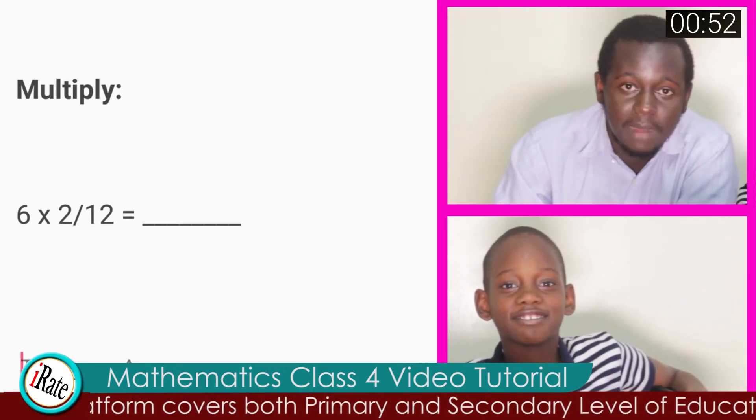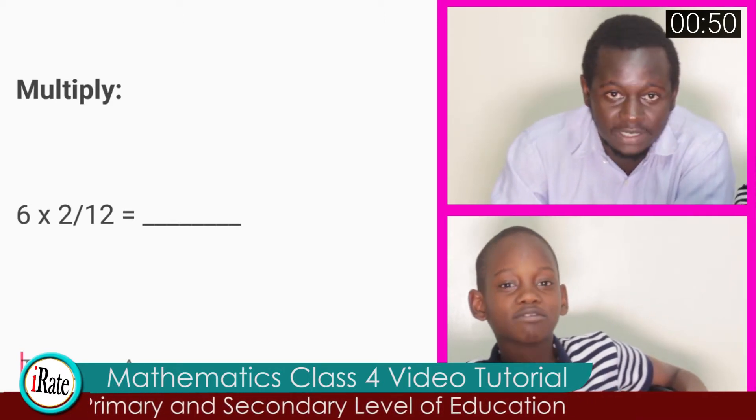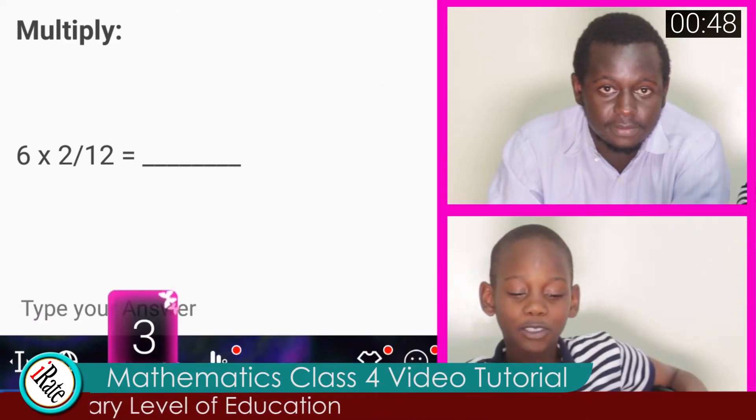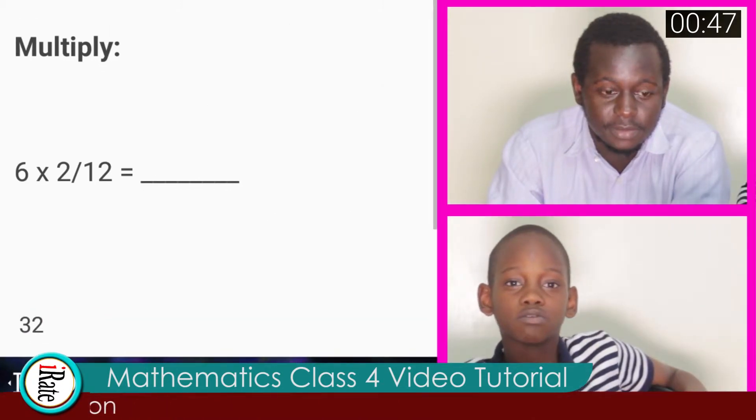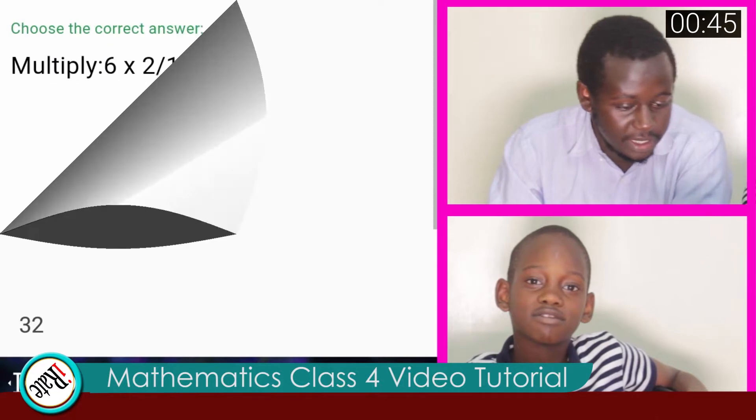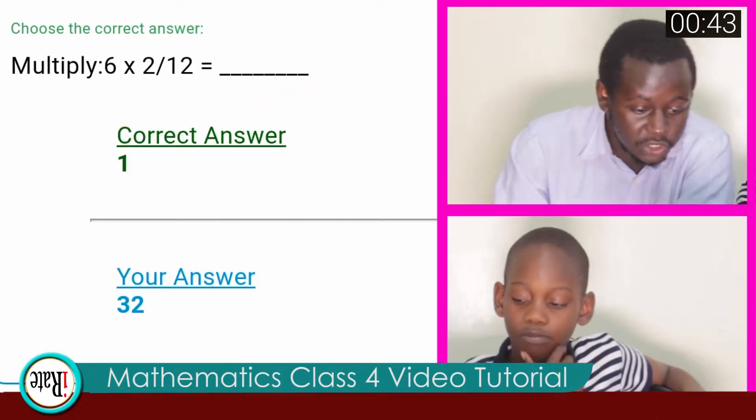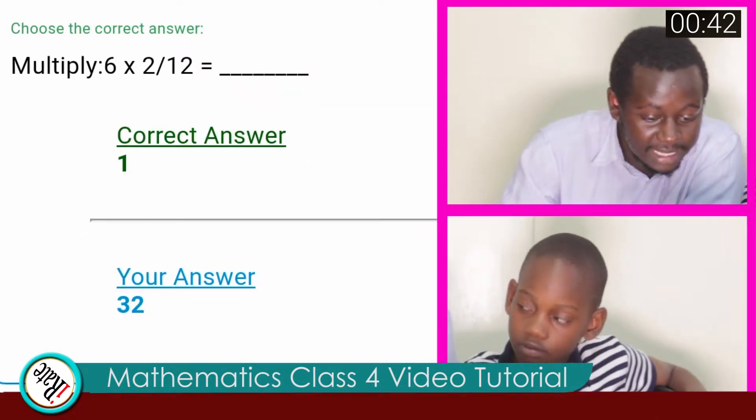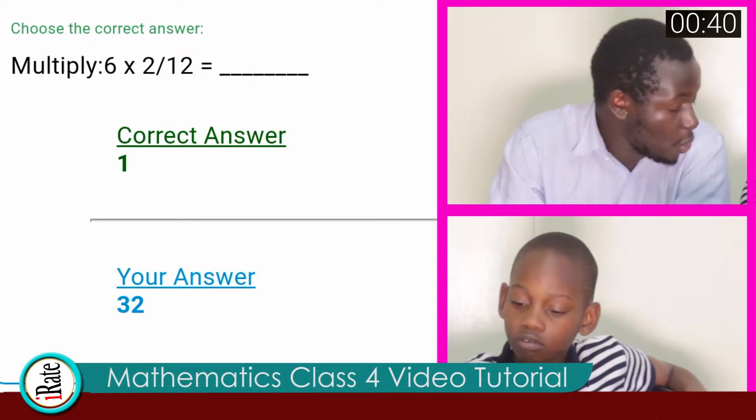Question number nine. Multiply. Six multiplied by two over twelve. The answer to question number nine is thirty-two. Incorrect. The correct answer to question number nine is one. Why?